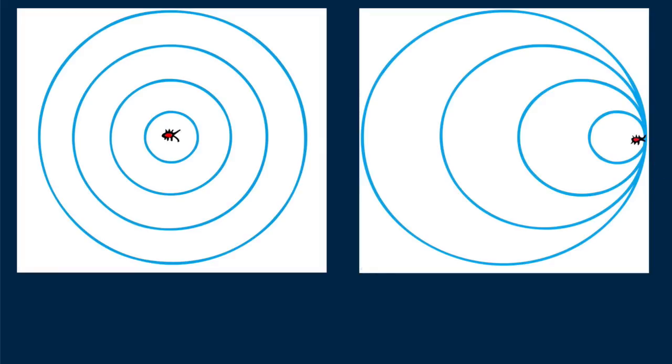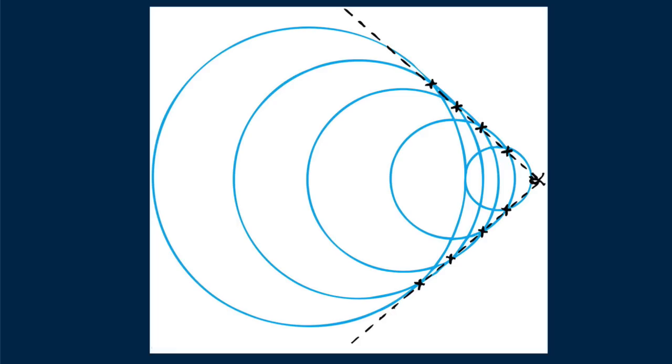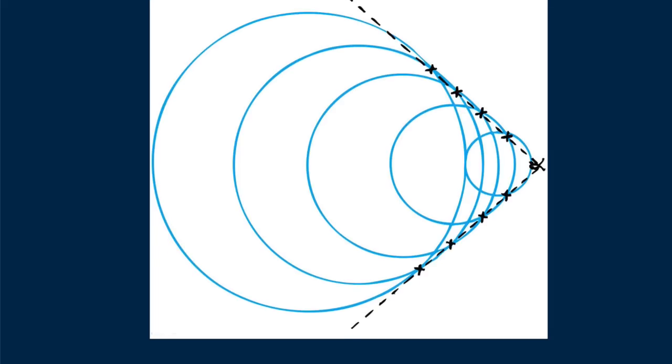When the bug swims faster than the waves it produces, it ideally produces this wave pattern. The waves overlap at the edges and produce a v-shape. This is a bow wave which appears to be dragging behind the bug.